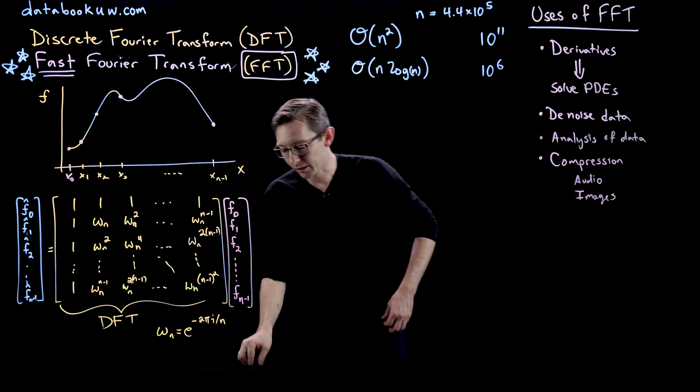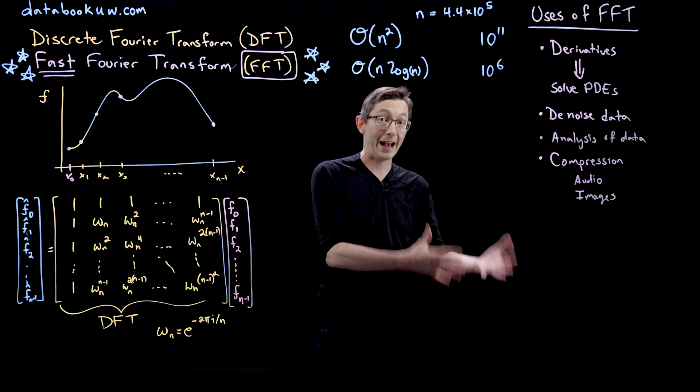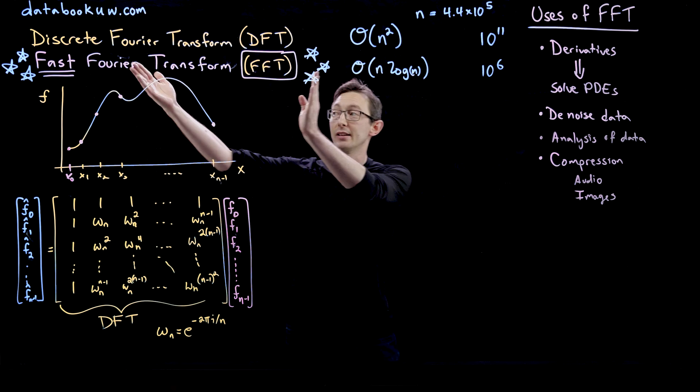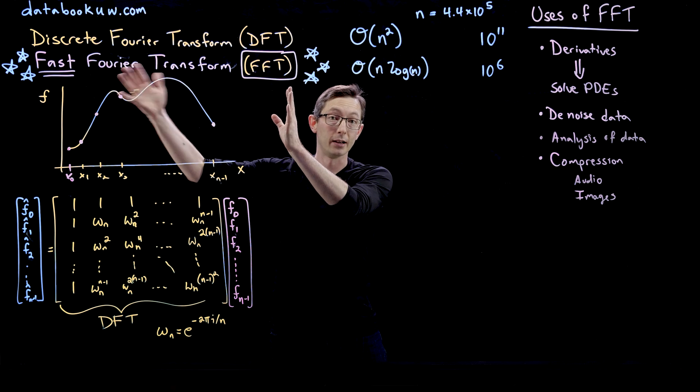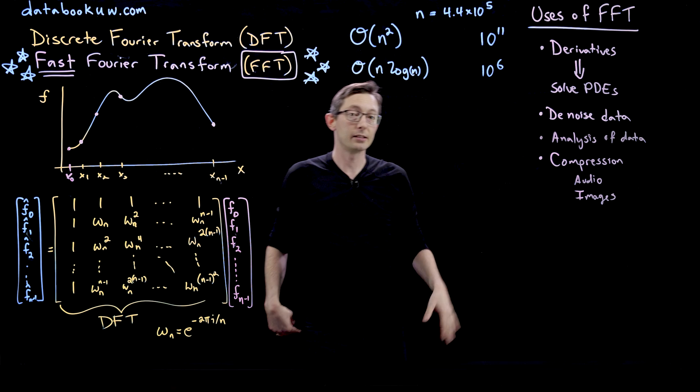And especially, I'm going to show you examples in audio and images. In the modern era, we actually do something called a wavelet transform or a fast wavelet transform. That's for enhanced image compression. But again, it's still built on this fast Fourier transform algorithm. So this is really the engine driving all of these applications.